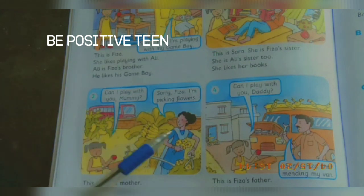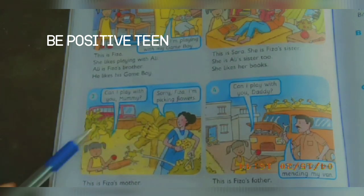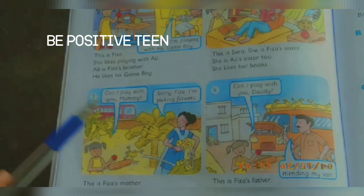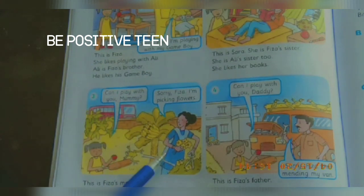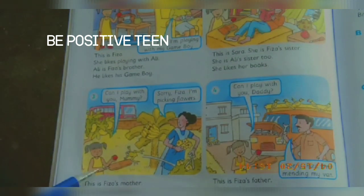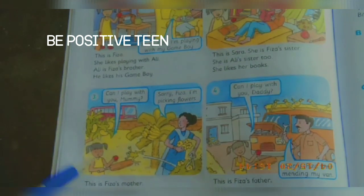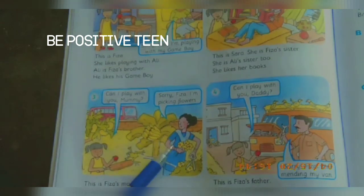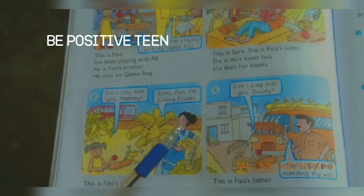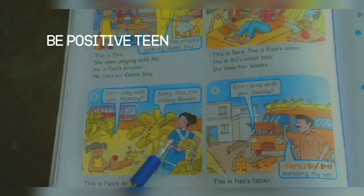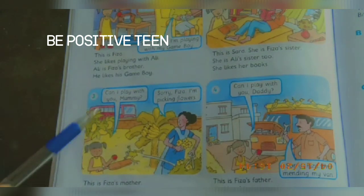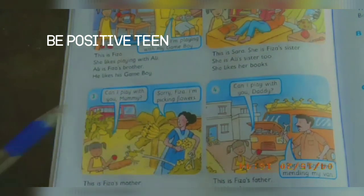Picture number three: In this picture we can see a garden. There is a banana tree and a mango tree. There is a woman — she is Fizza's mommy. Fizza comes to her mother and asks: Can I play with you, Mommy?